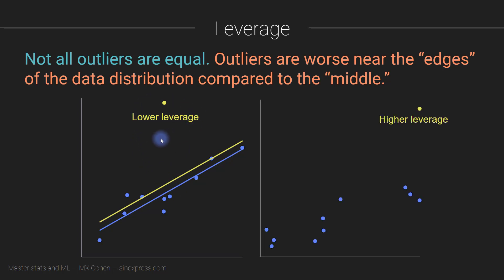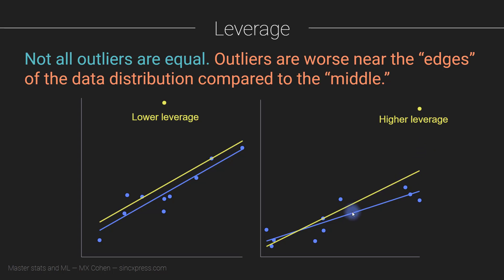That's called low leverage. Then we have a data point over here, where again we have a trend line and we can draw the trend lines with and without that outlier being present. When we include the outlier, it pulls the line all the way up, so we're actually getting a really different slope including versus excluding the outlier. This is a case where the outlier has higher leverage, because it has a bigger effect on the resulting statistical model.